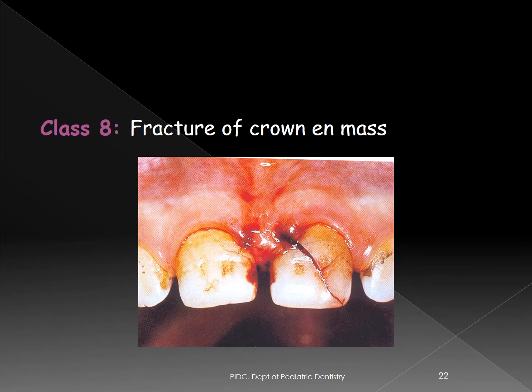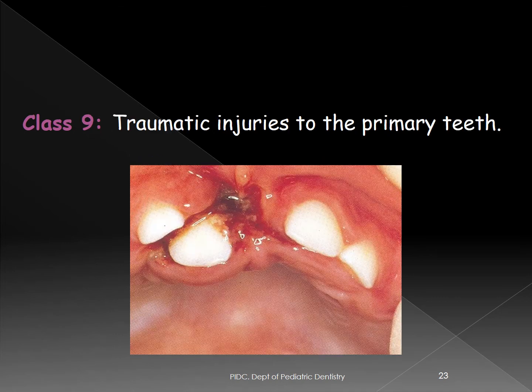Class VIII is en masse crown fracture — very difficult to restore. Class IX is traumatic injuries to the primary teeth. In the Ellis and Davies classification, Class IX groups together all traumatic injuries to primary teeth — enamel fracture, enamel-dentine fracture, enamel-dentine-pulp fracture, horizontal root fracture, en masse fractures — while Classes I through VIII are only for permanent teeth.